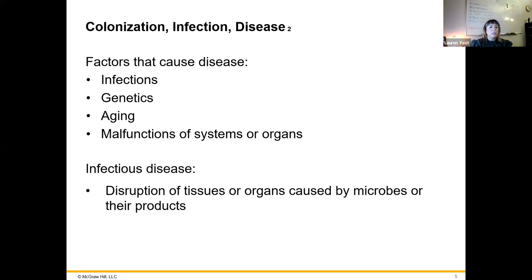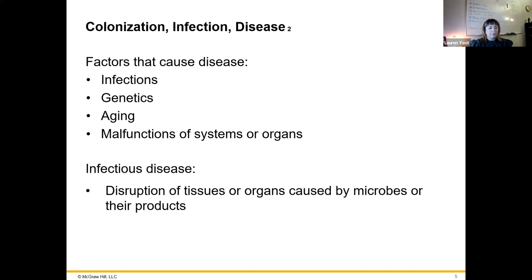There are not just infectious causes for disease. Disease can obviously be caused by infection, but we can have problems with genetics and genetic abnormalities. We can have issues due to aging, malfunctions of systems or organs, or even cancer caused by radiation exposure — that's a disease but it's not infectious. Infectious disease refers to the disruption of tissues or organs, causing that deviation from health due to the presence of microbes and infection.